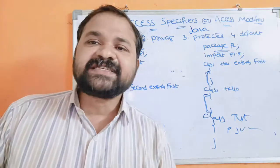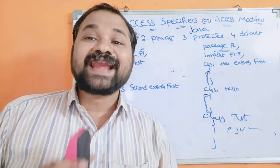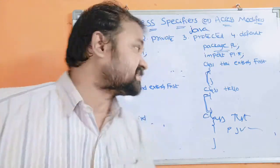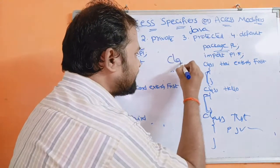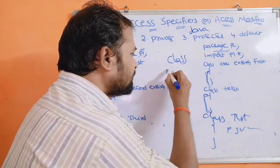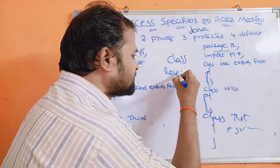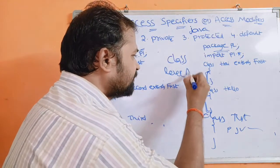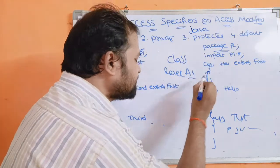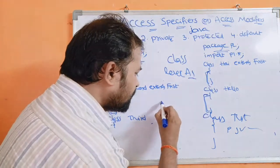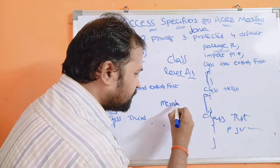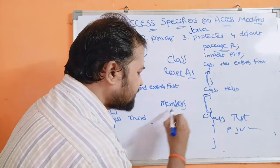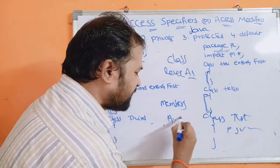First let us see about class-level access specifiers, and then we will see about members access specifiers.